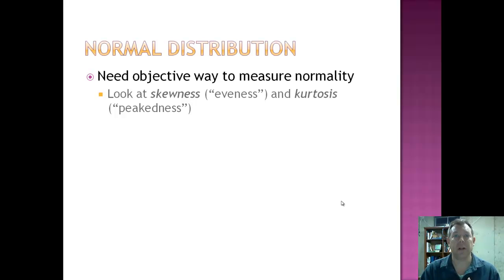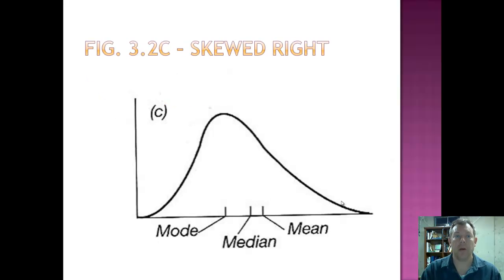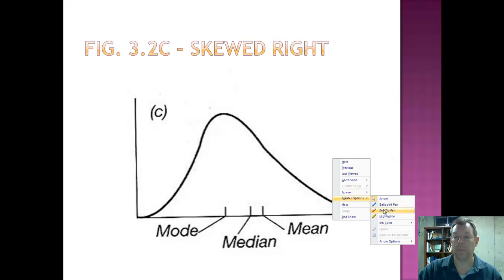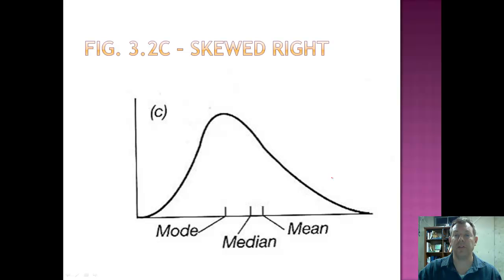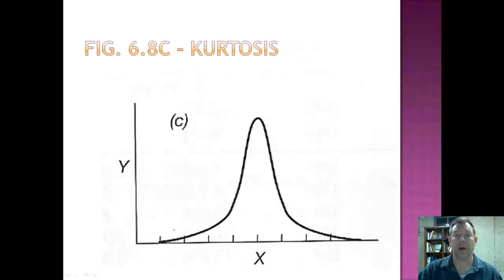So we need a more objective way than just looking at a graph. Looking at a graph helps, but it's not very objective. And so a couple of the properties of a curve that we want to look at are things called skewness, or skewness, and kurtosis. Skewness is the evenness or the symmetry. Kurtosis is the peakedness. So, for example, here's figure 3.2c from your book, and this is a curve that is skewed to the right. And let me go ahead and get a pen here. So, when we talk about skewness, you talk about where the long tail is. And so the long tail is on the right, so this is skewed right. Of course, if you've got skewed right, you can also have skewed left. And this is kurtosis. You've got leptokurtotic and platykurtotic. The basic idea is that these deviate from normality in a particular manner.